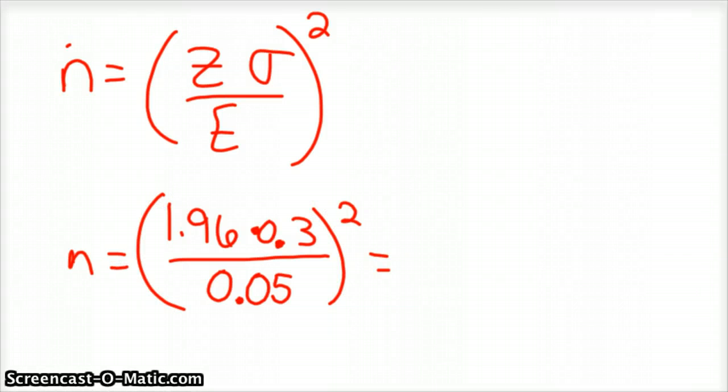And so you do all this, you plug it in, so 1.96 times 0.3, and you get 0.588 divided by 0.05, and you get 11.76, and that has to be squared.